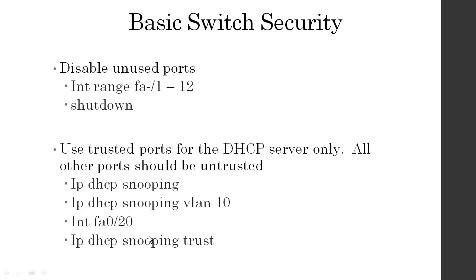First thing you should do is disable unused ports — you can disable them by a whole range. From global mode: interface range FA0/1 dash (next number), for example ports 1 through 12. Then hit shutdown and you're all good. For the DHCP server port, set up DHCP snooping: IP DHCP snooping VLAN 10, then on the interface do IP DHCP snooping trust. All other ports should be untrusted so nobody else is pushing out fake IP addresses on your network.